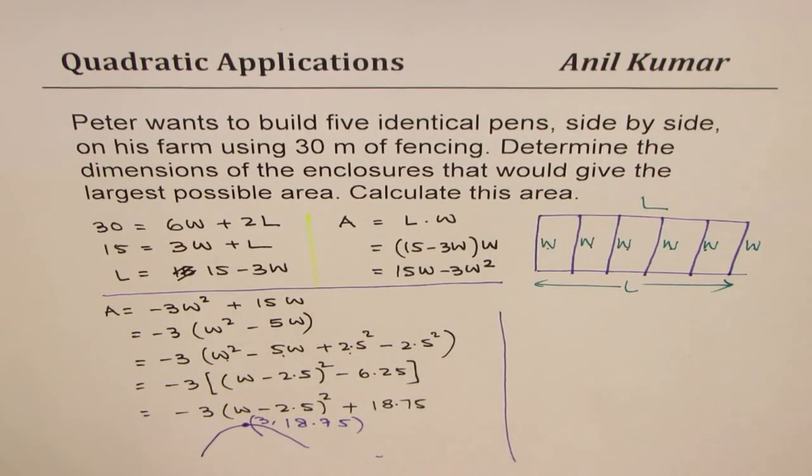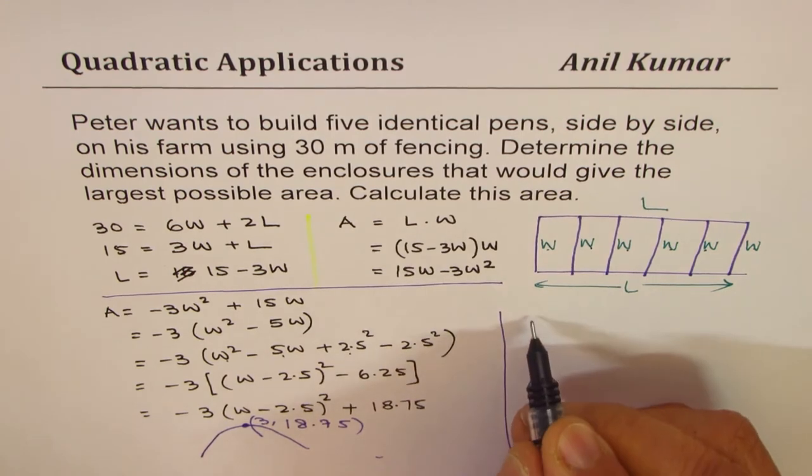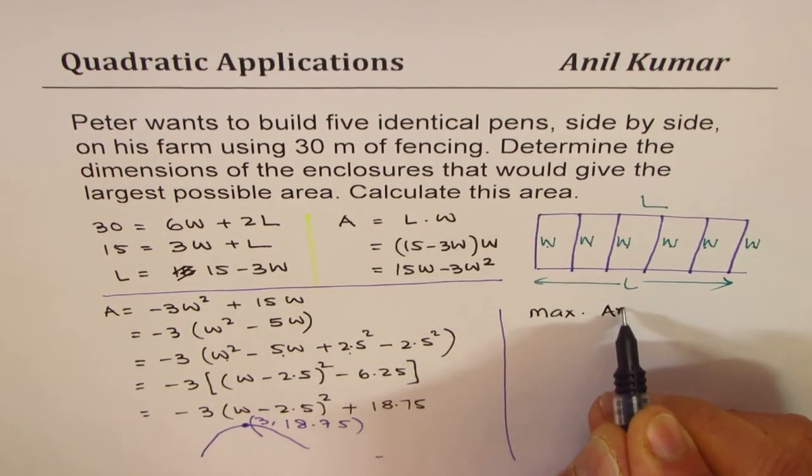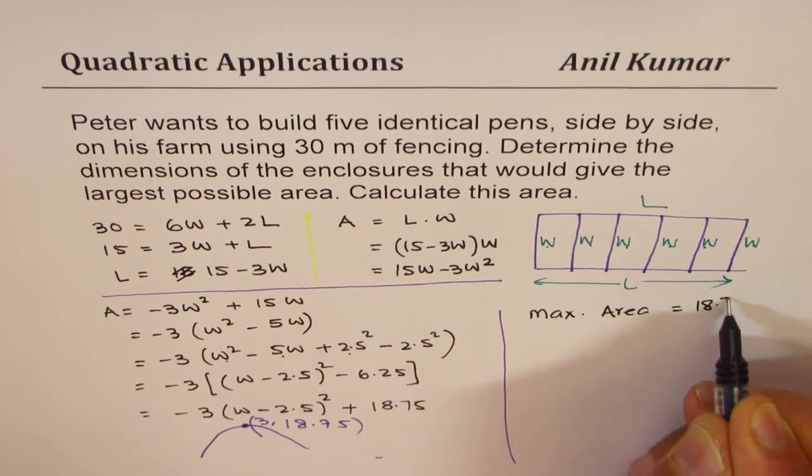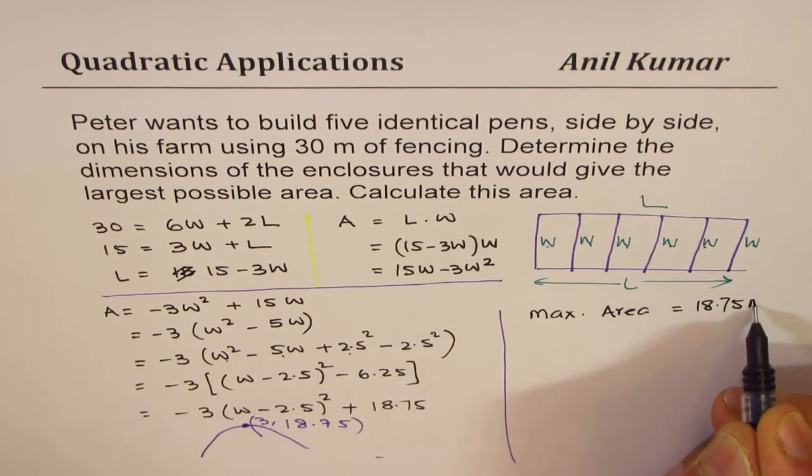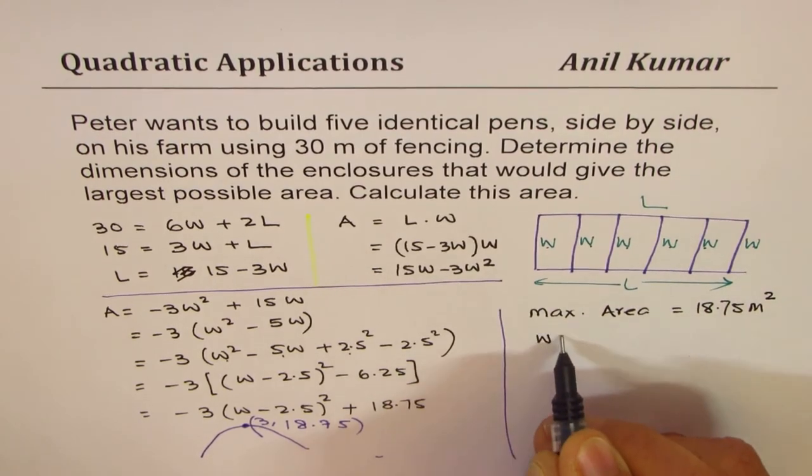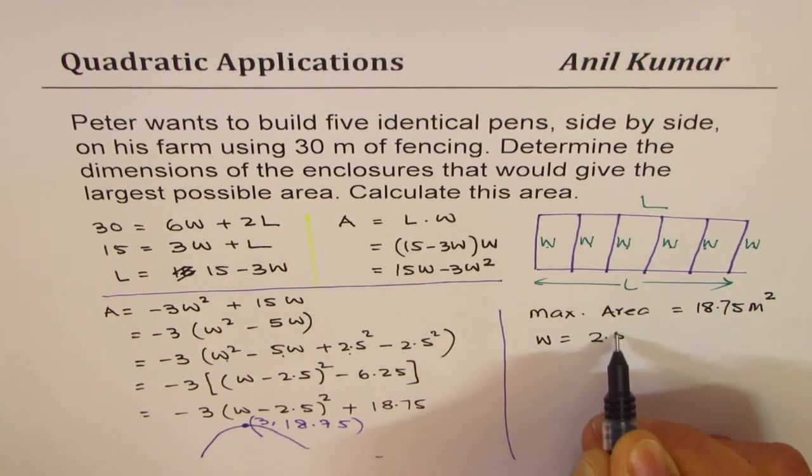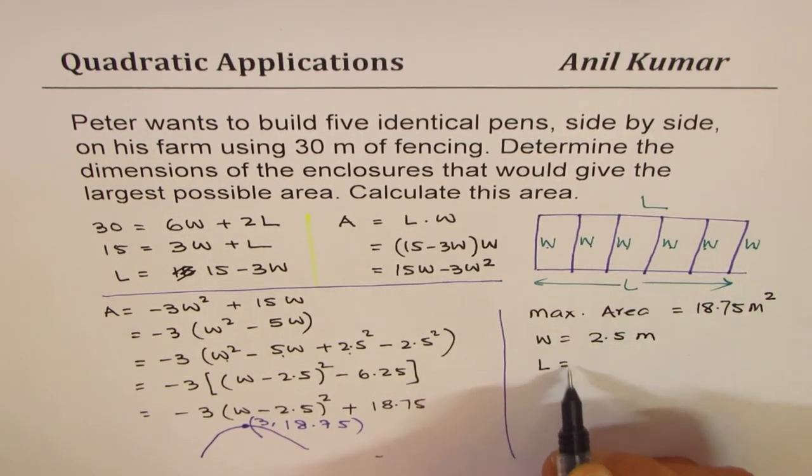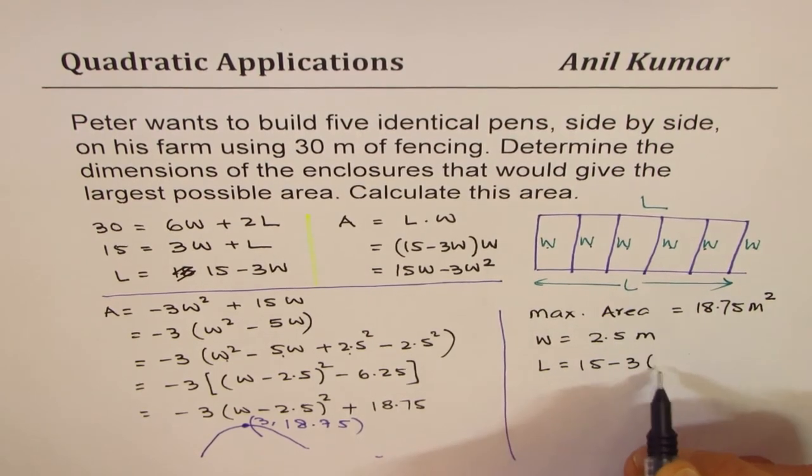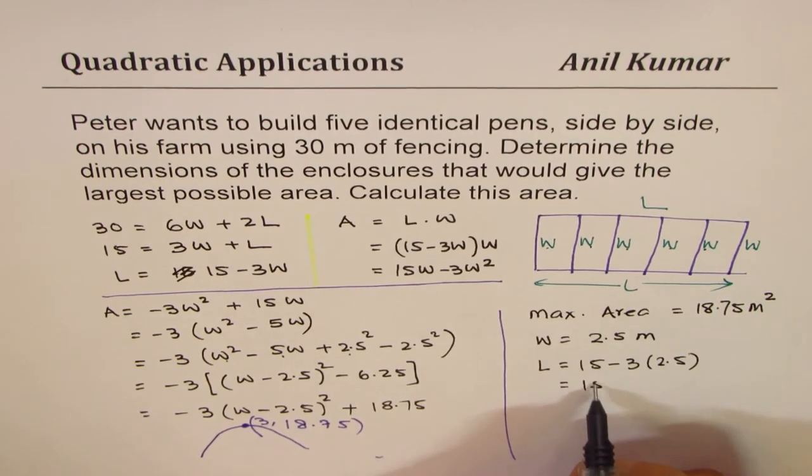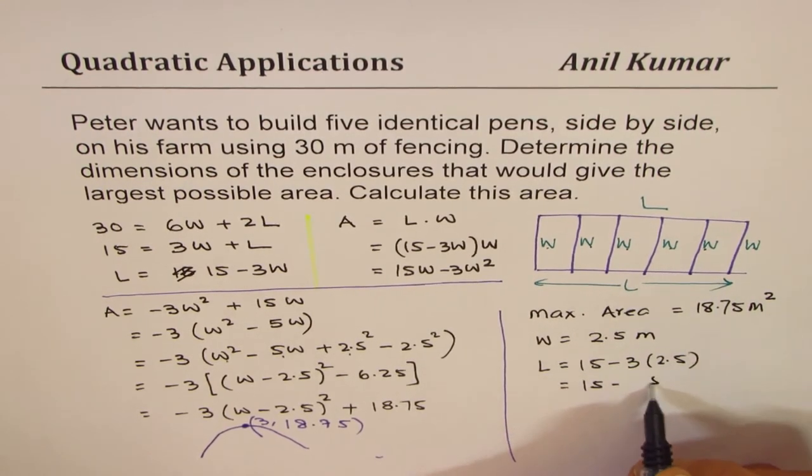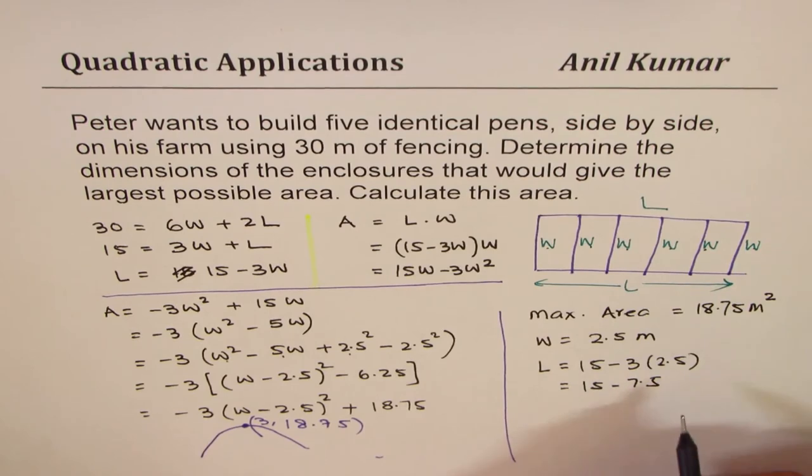From here we know the maximum area will equal 18.75 meters squared. Width equals 2.5 meters. Length equals 15 minus 3 times 2.5, and that is 15 minus 7.5, so it is 7.5 meters.